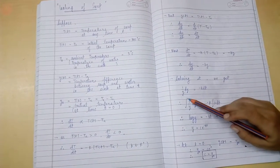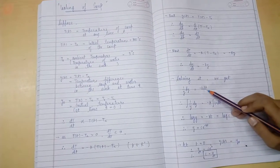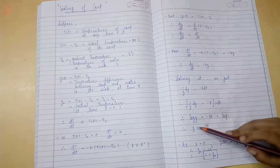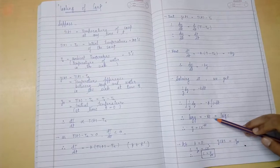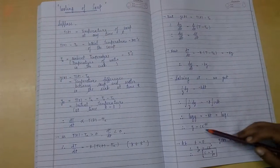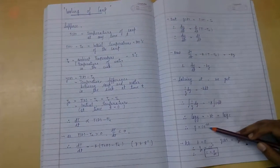Solving it, we get 1 by Y dY is equal to minus K dt. On integrating it, we get log Y is equal to minus K t plus log C. Therefore, Y is equal to C e raised to minus K t.